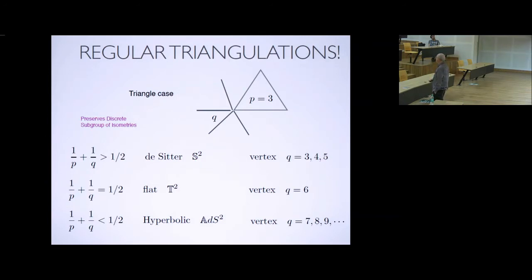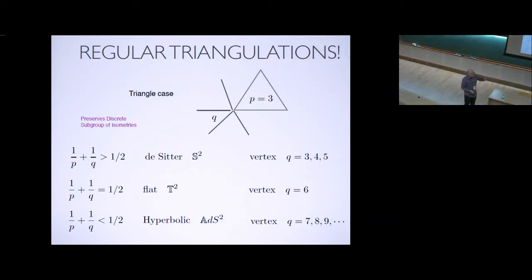Positive curvature. Platonic solids. Three is the tetrahedron. Four is the octahedron. And the icosahedron is the other one.